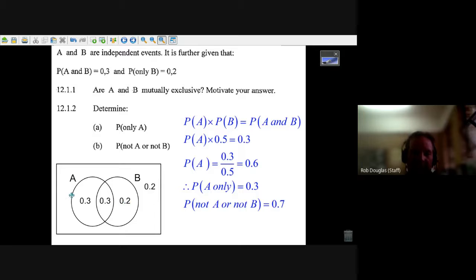The probability of A is 0.6, which means the probability of only A has to be 0.3, because it's got to add up to 0.6. And I've showed it in this diagram kind of nicely, I think.